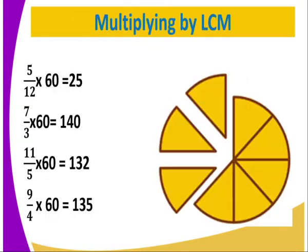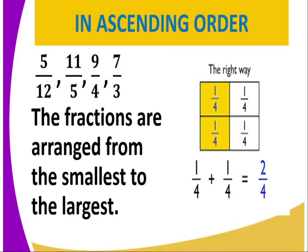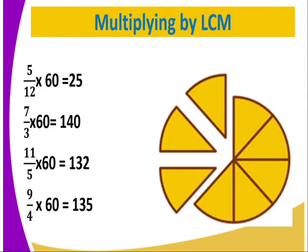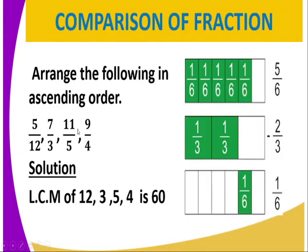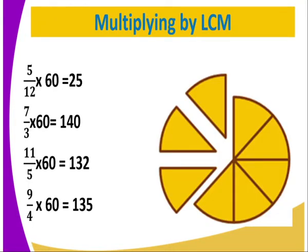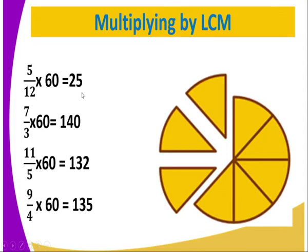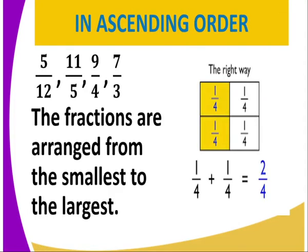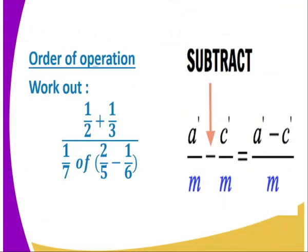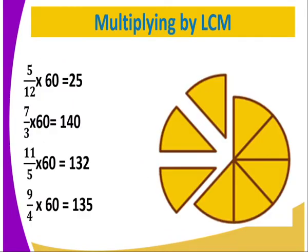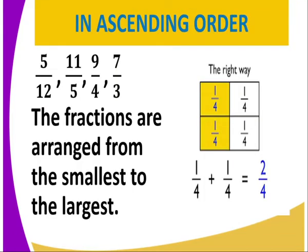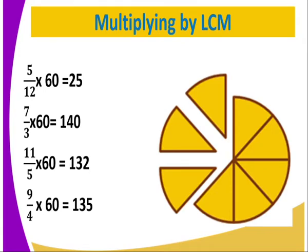Now from there, you look at the numbers, which number is bigger or is small. So that is to mean, the biggest number is the one being represented by 140. So we are arranging the number in ascending order. So that is to mean, in ascending order, we are ranging from the smallest to the largest. So the smallest number here is 25. So 25 is being represented by 5 over 12. So that is to mean, 5 over 12 is the smallest fraction, followed by 132, whereby the 132 is being represented by 11 over 5, followed by 135, whereby the 135 is represented by 9 over 4. And the last one is 140, which is 7 over 3.